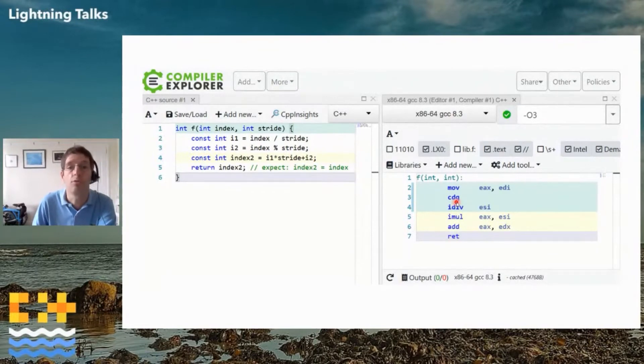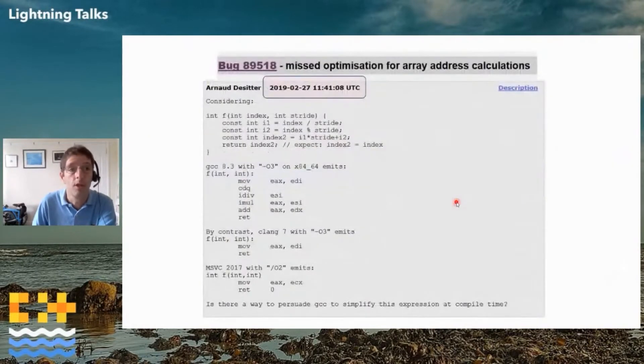However, as a good citizen, I decided to open a bug report. That was in February 2019. I put that very small snippet, exactly the same one I pasted in Godbolt, and said GCC8 does this job, which is correct but not performant, whereas the other ones do a much better job. And that was the end of it, as far as I'm concerned. And here is what happened.